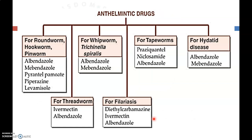These are the different drugs used for the treatment of different types of helminthiasis. For roundworm, hookworm, and pinworm: albendazole, mebendazole, pyrantel pamoate, piperazine, and levamisole. For threadworm: ivermectin and albendazole. For whipworm: albendazole and mebendazole. For filariasis: diethylcarbamazine and ivermectin and albendazole. For tapeworm: praziquantel, niclosamide, and albendazole. For hydatid disease: albendazole and mebendazole.